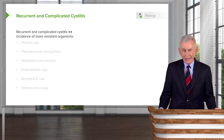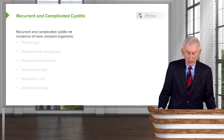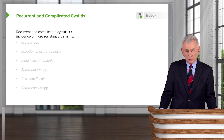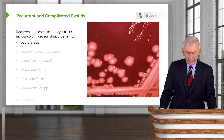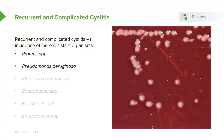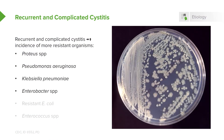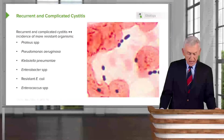Recurrent and complicated cystitis leads to an increased incidence of more resistant organisms not usually found causing cystitis. These include Proteus, Pseudomonas aeruginosa, Klebsiella pneumoniae, Enterobacter species, and even some resistant E. coli. Among the gram positives, Enterococcus is notable.